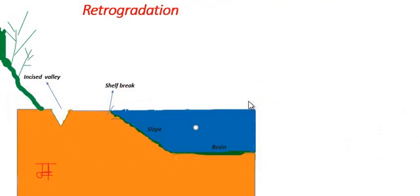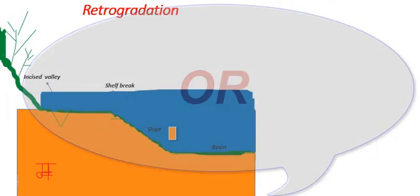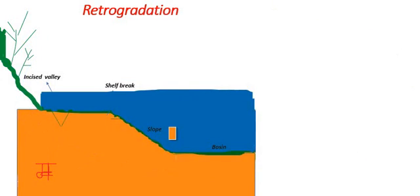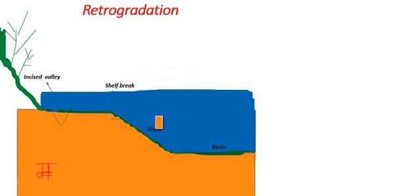Retrogradation is the landward migration of shoreline. Retrogradation is the process of sedimentation in marine basins in which sediment supply is less than generation of accommodation space.